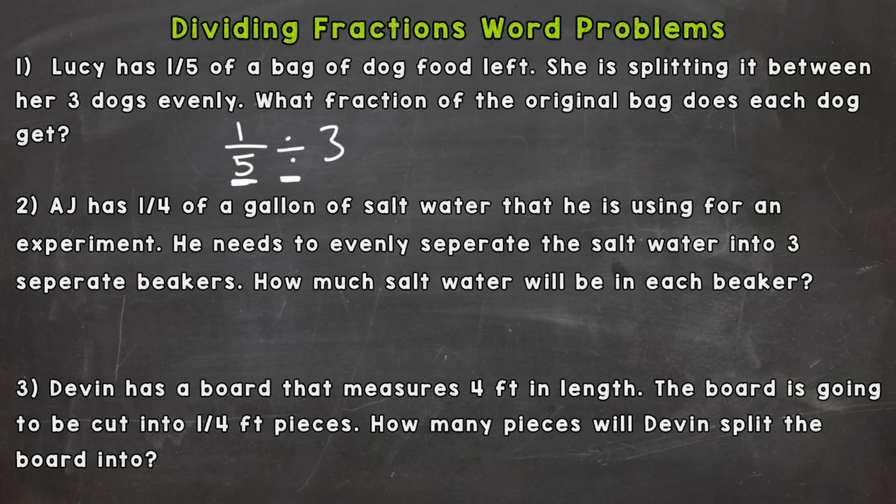So now we can keep switch and flip in order to solve this. Now I usually like to rewrite the problem underneath the division problem but due to space here I will write it to the right. So keep, switch, and we need to flip that 3 and it'll now be 1/3. Now we can go straight across and get to our solution. 1 times 1 is 1, 5 times 3 is 15.